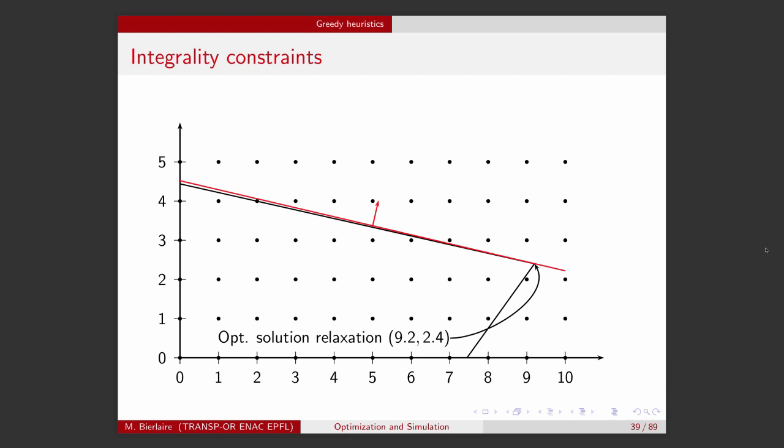And here, we have two variables. Each of them can be rounded down or up. Therefore, we have four possibilities to round this solution. And these are the four possibilities. Unfortunately, all these feasible solutions which are neighbors of the optimal solution of the relaxation, all of them are infeasible. They do not verify the constraints. They're actually all of them out of the polyhedron.